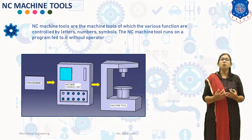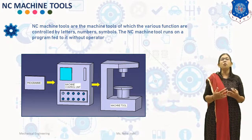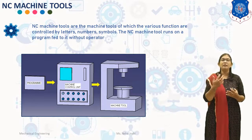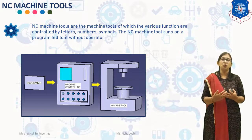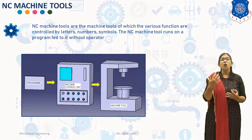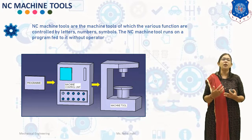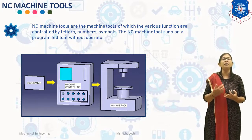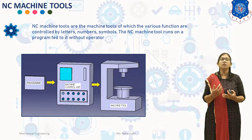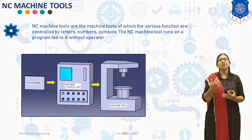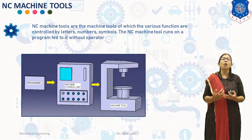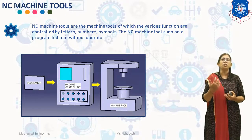In NC/CNC machine tool, one or more functions may be automatic, like starting and stopping of the machine tool spindle, controlling the spindle speed, positioning the tool at the desired location and guiding it along the desired path by automatic control of the motion of the slides, controlling the feed rate, and changing the tools.